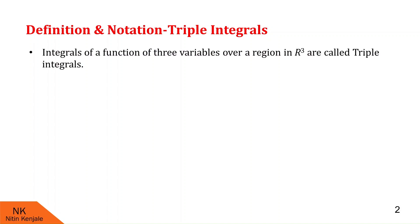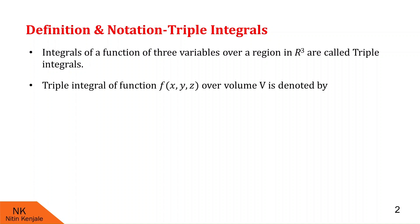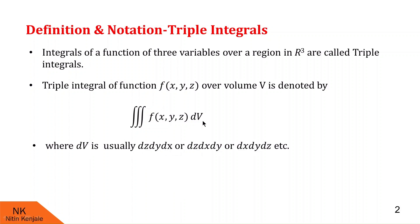Integrals of a function of 3 variables over the region of R³ are called triple integrals. The triple integral of a function of 3 variables x, y, and z over the volume V is denoted by the triple integral of f dV, where dV is usually dz dy dx, or dz dx dy, or dx dy dz, etc. All possible combinations of dx, dy, and dz can be used for dV.